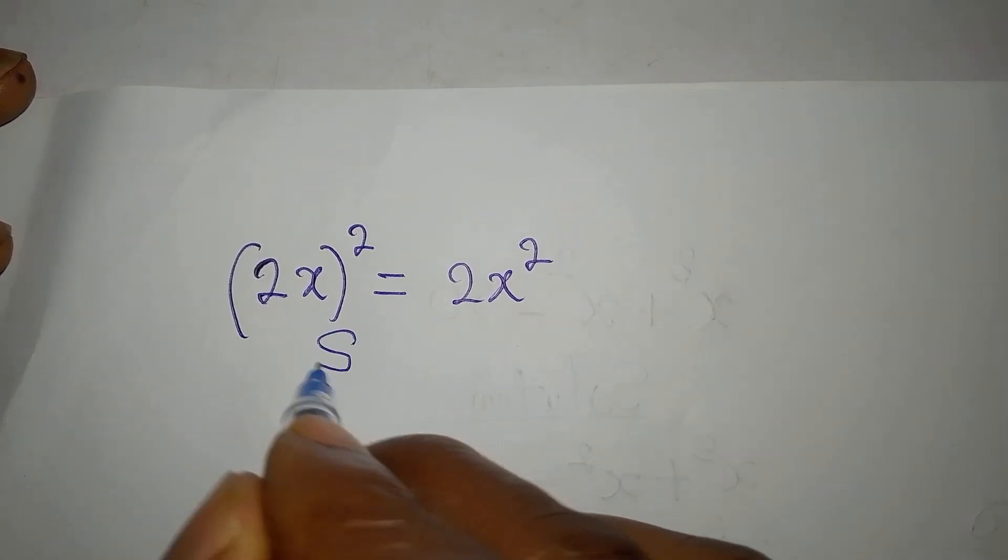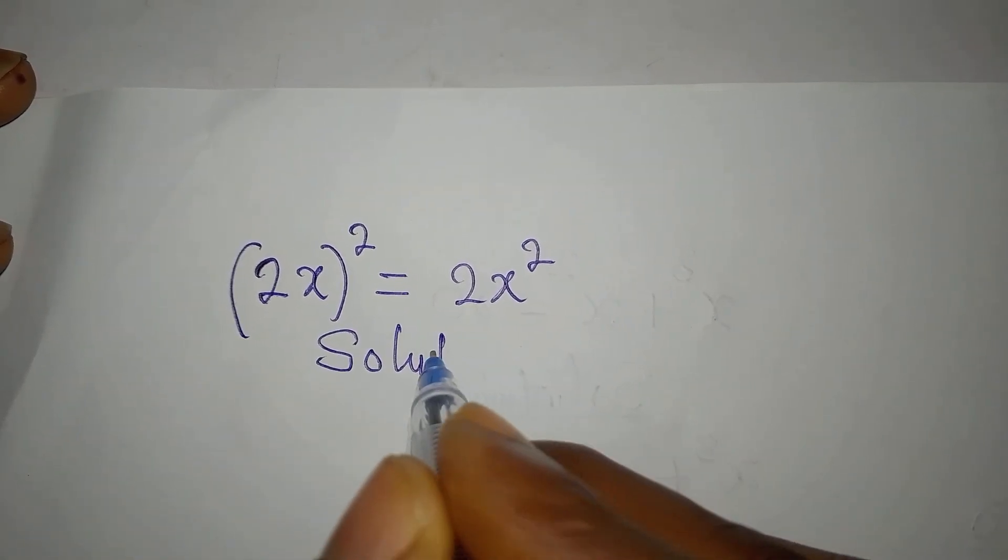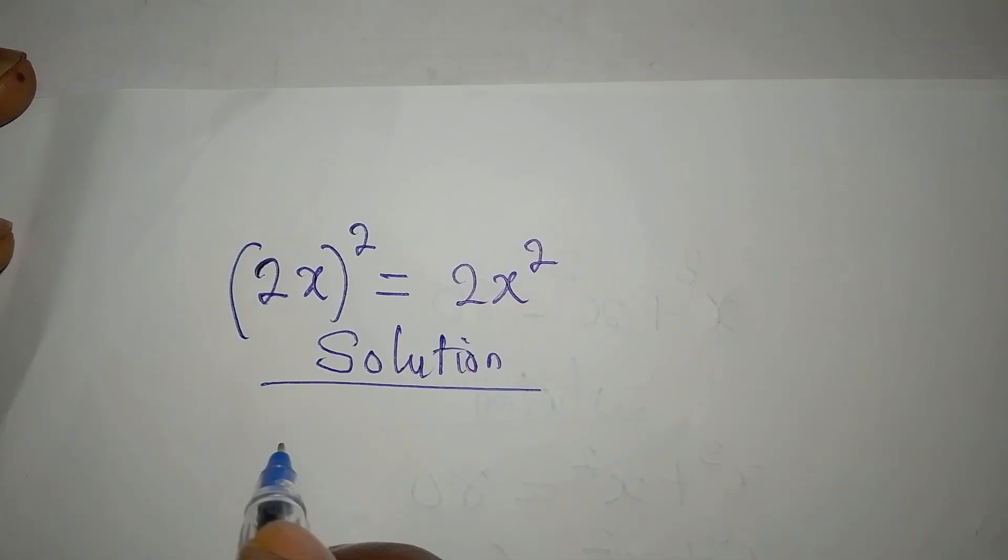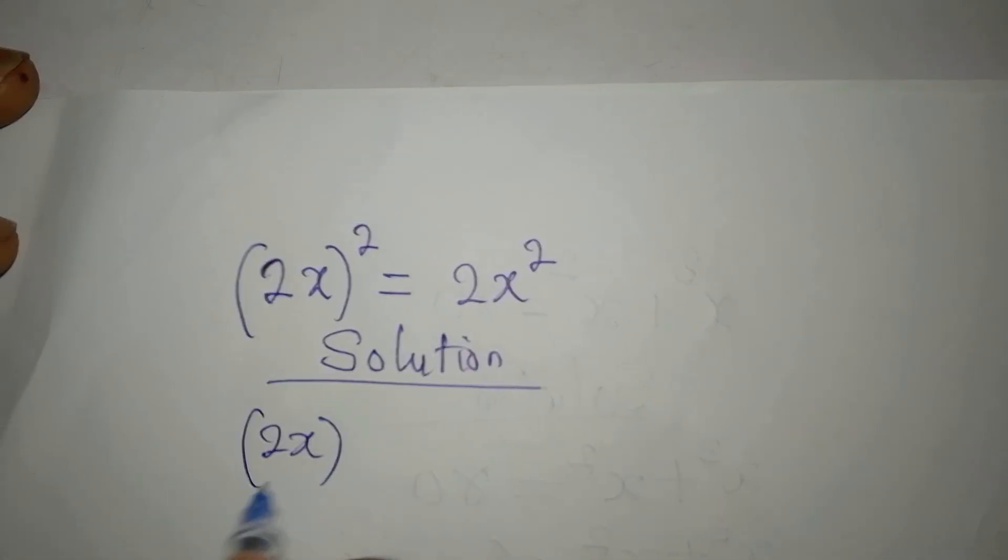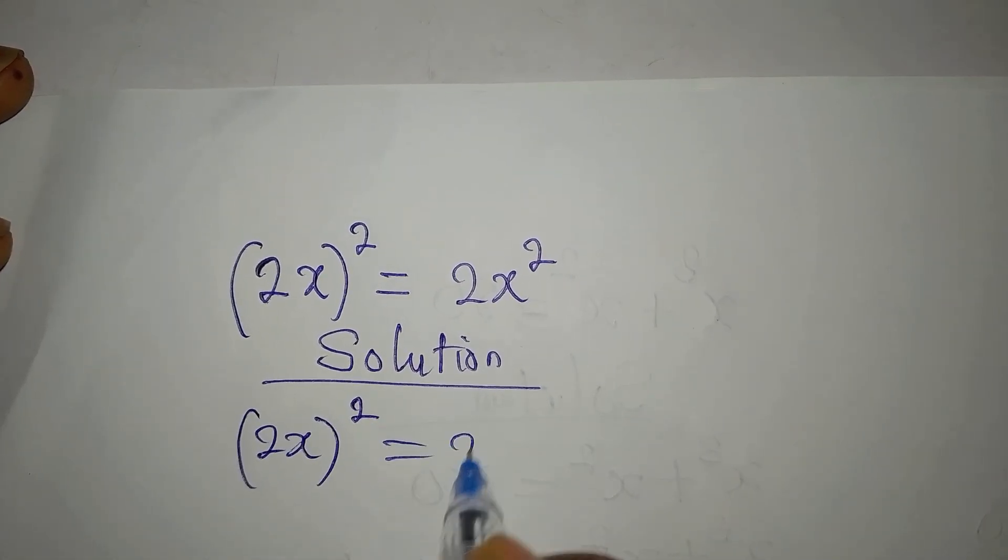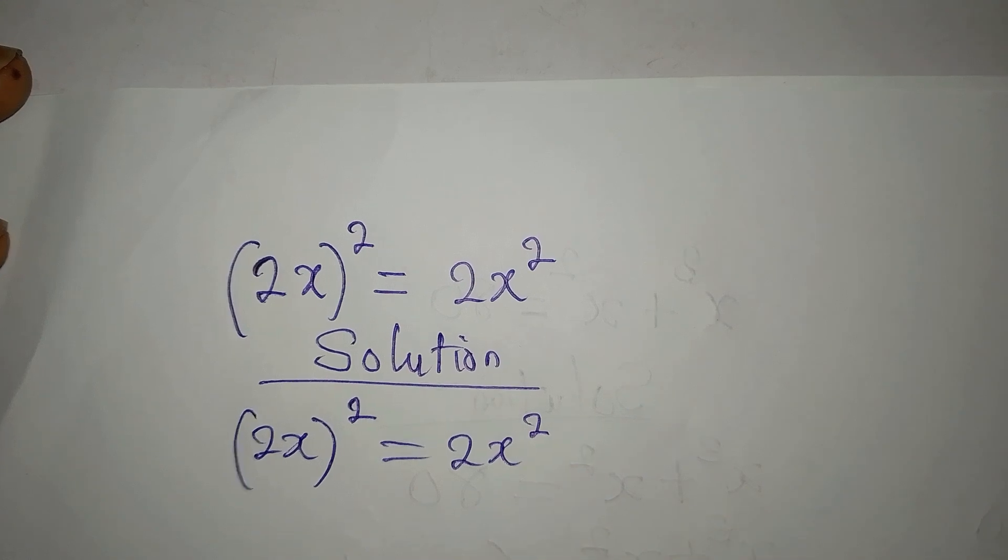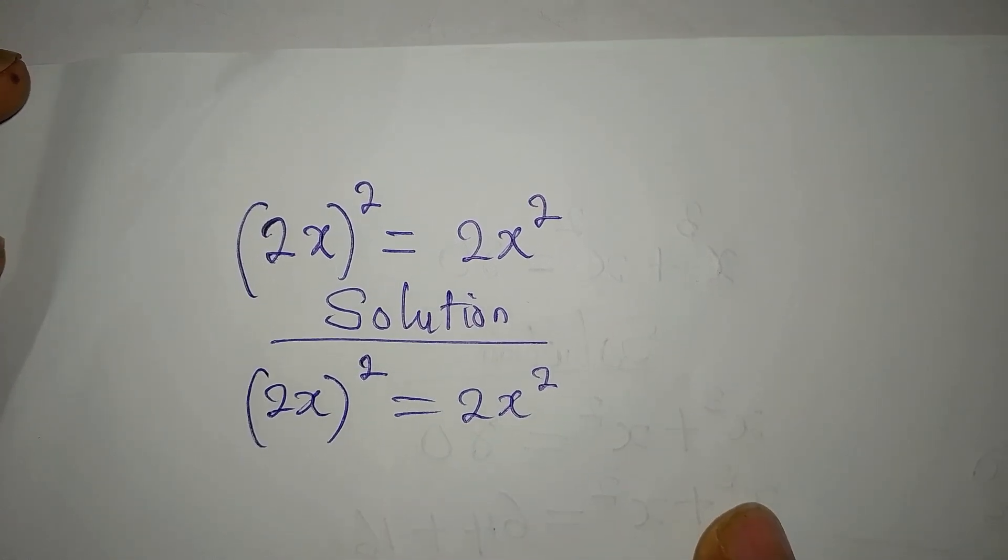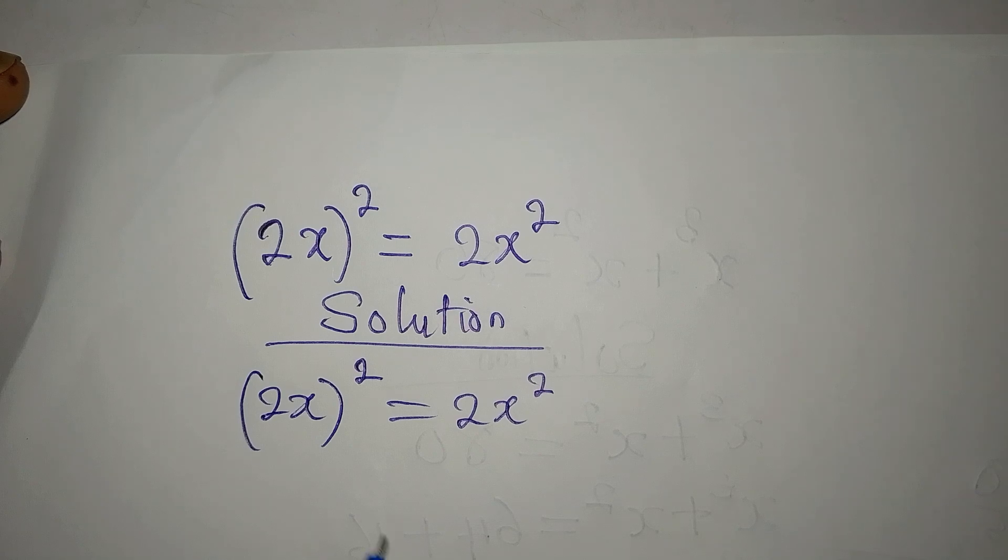Hi everyone, let's provide the solution to this. We have (2x)² = 2x². I gave this on one of my pages and some persons were saying that it cannot be solved.